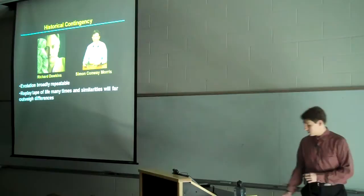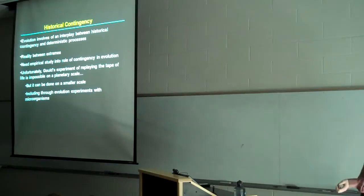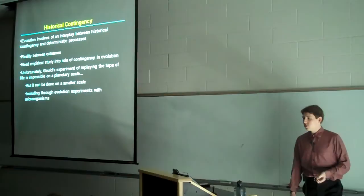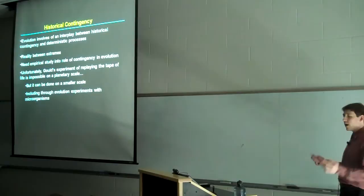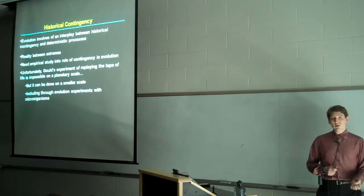As a result, they point out, evolution is broadly repeatable. Were one to replay the tape of life, one might notice significant differences, but replay it many times, and one would be struck far more by the similarities amidst minor differences. The reality is, though, evolution involves both an interplay between historical contingency and deterministic processes, such as natural selection. The reality is between the two extremes of radical contingency and radical convergence. So what's needed, really, is empirical study into the role of contingency and chance in evolution.